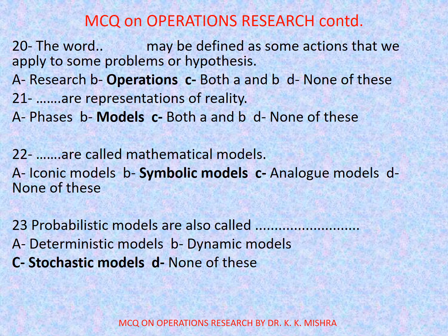Question number 21: Dash are representations of reality — options are: A. Phases, B. Models, C. Both A and B, D. None of these. Correct option is B: Models. Question number 22: Dash are called mathematical models — options are: A. Iconic models, B. Symbolic models, C. Analog models, D. None of these. Correct option is B: Symbolic models.